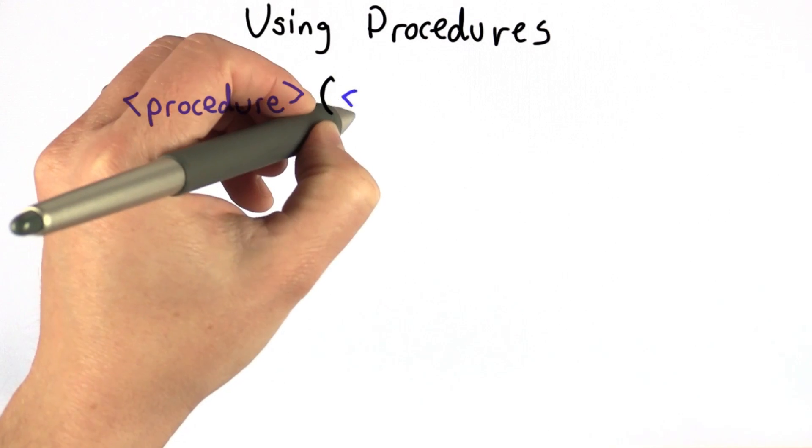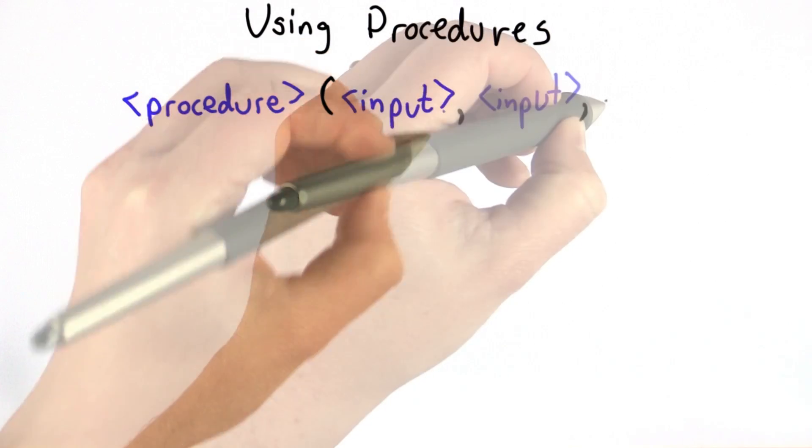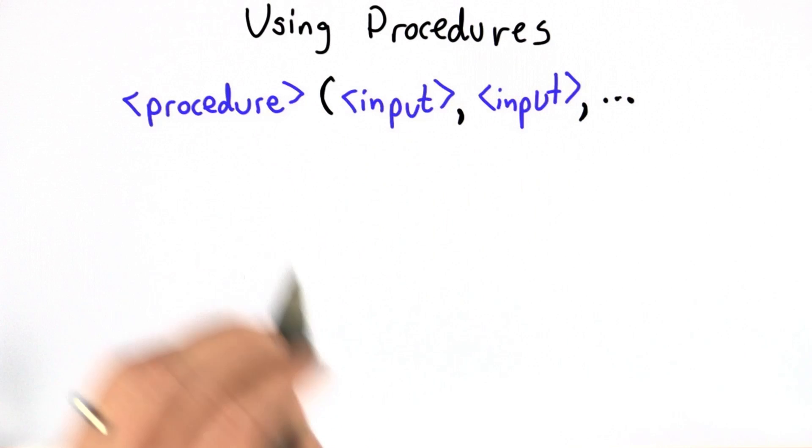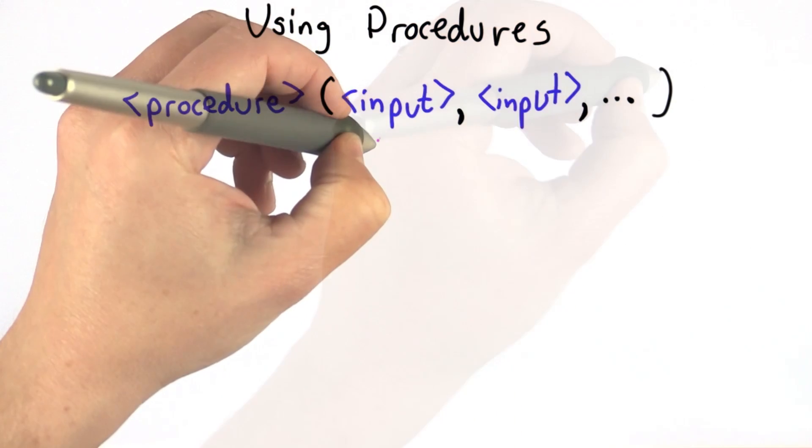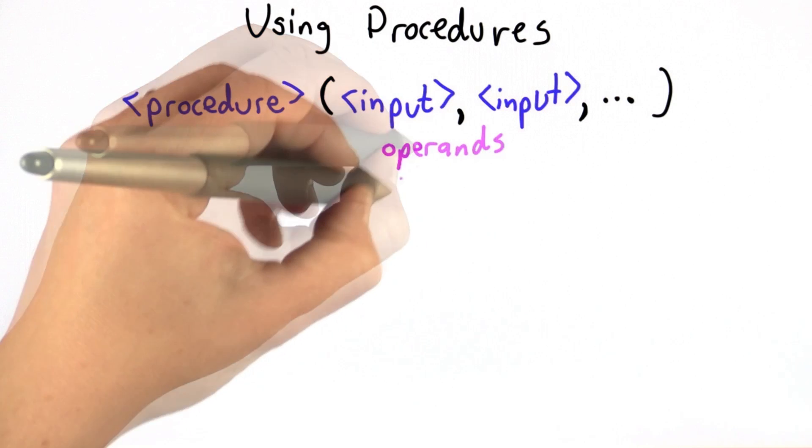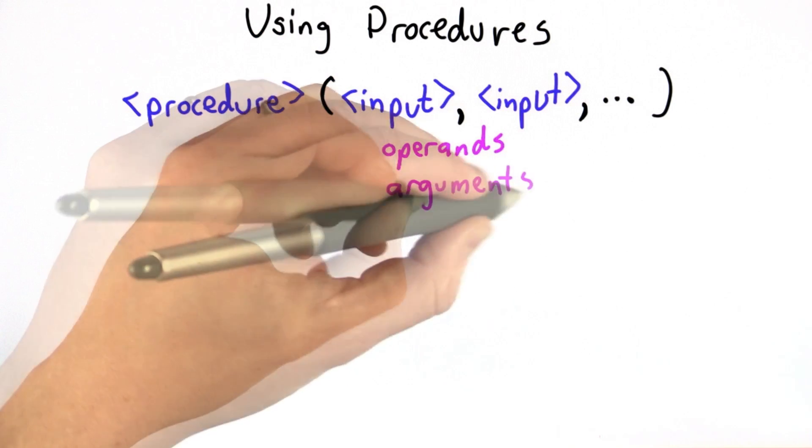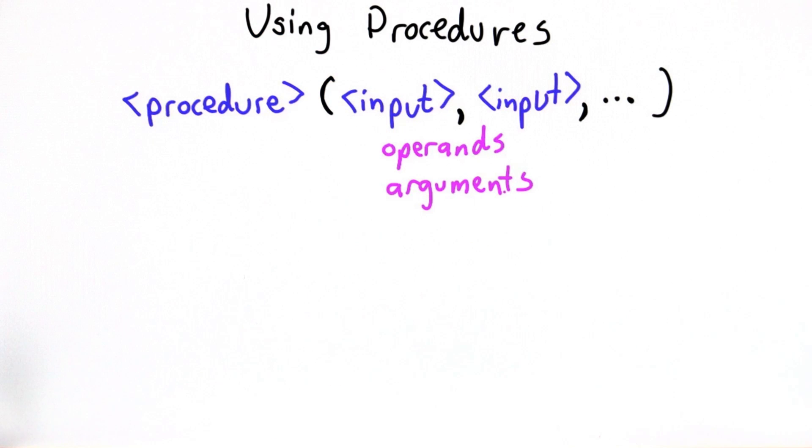And there could be any number of inputs, but it has to match the number of inputs the procedure expects. These inputs are sometimes called operands. They're sometimes called arguments. But we're not going to argue about that. We're just going to call them inputs.